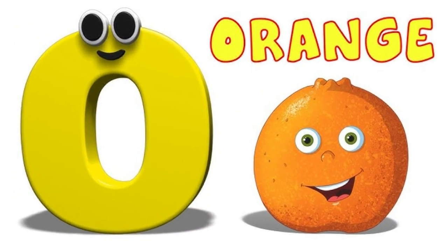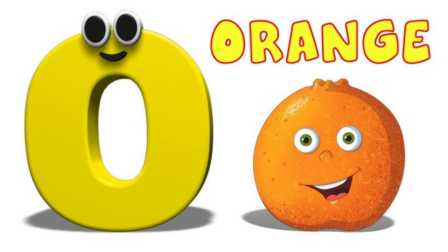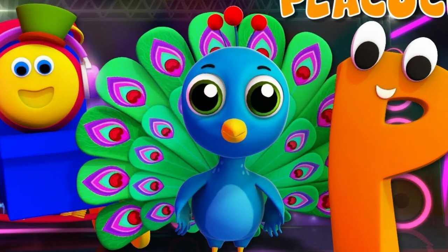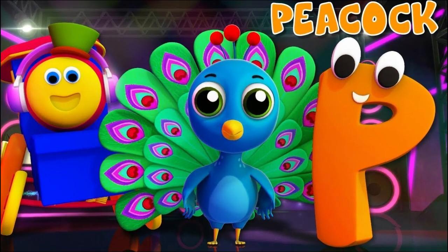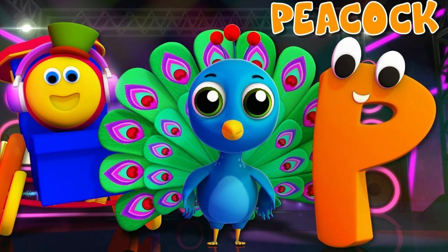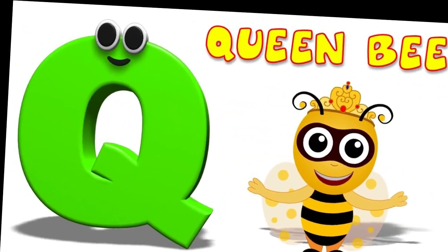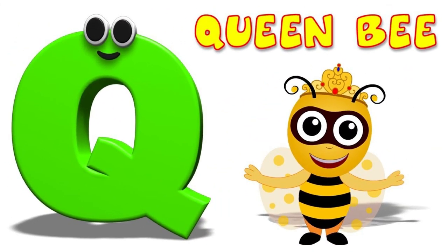O is for orange. Orange means santra. P is for peacock. Peacock means mor.